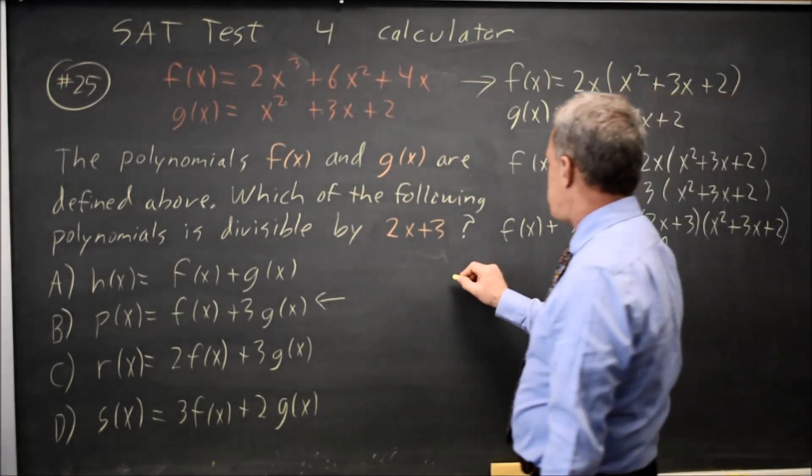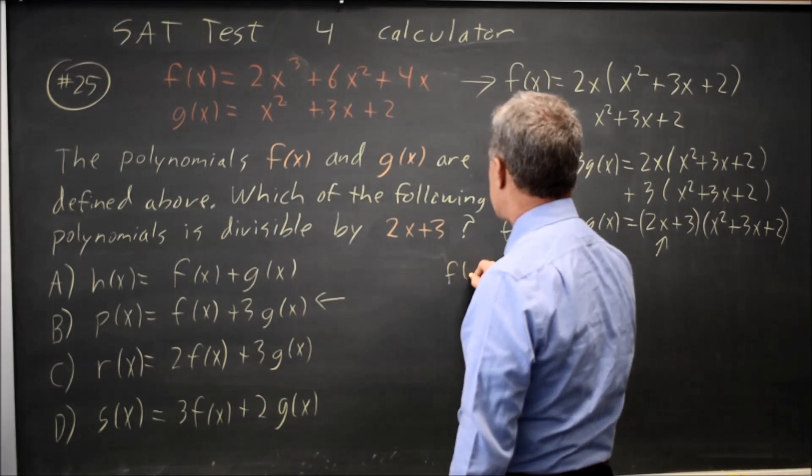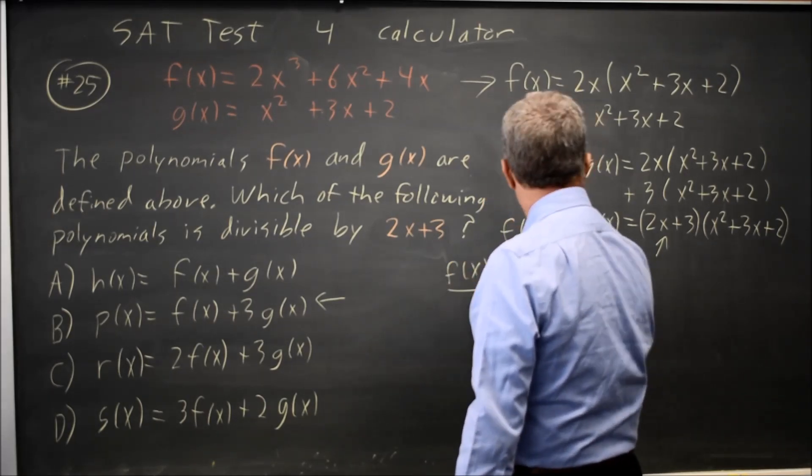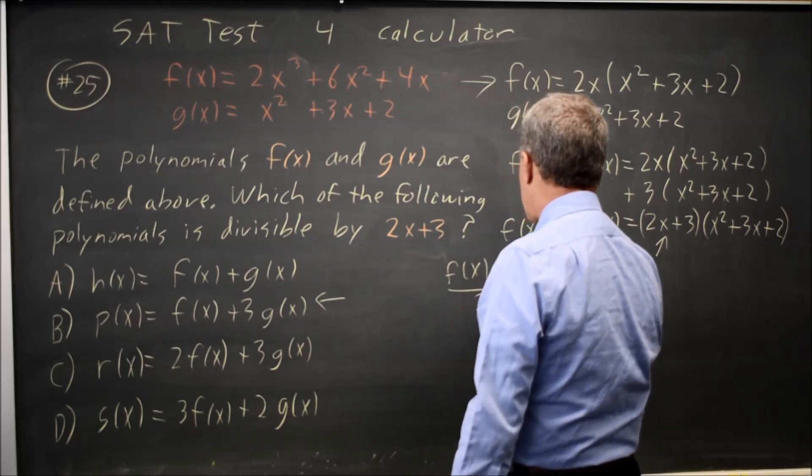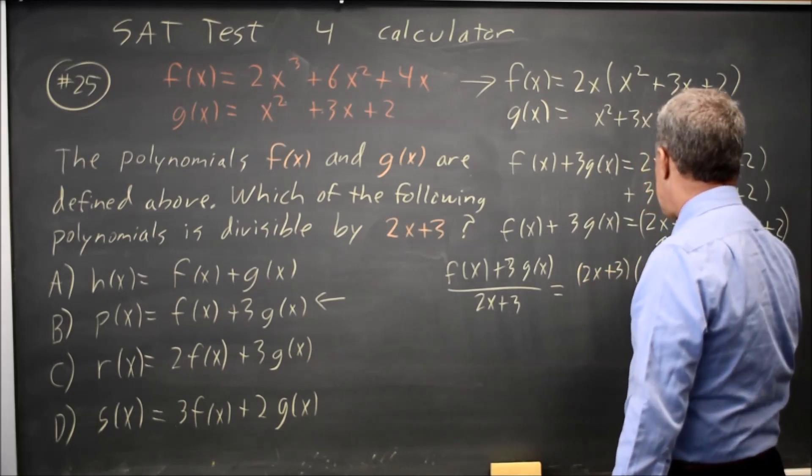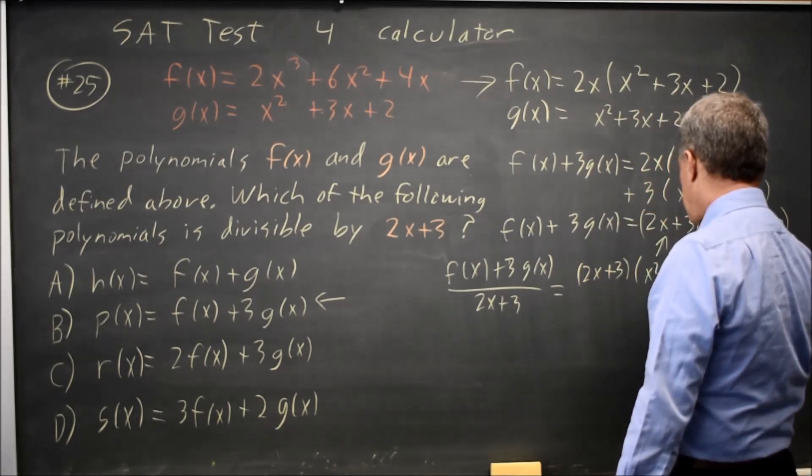We need to divide f of x plus 3g of x by 2x plus 3, and you get 2x plus 3 times x squared plus 3x plus 2.